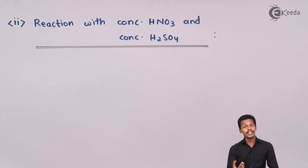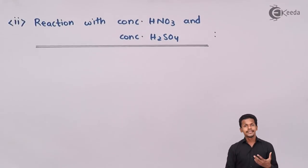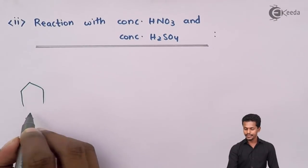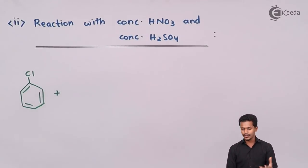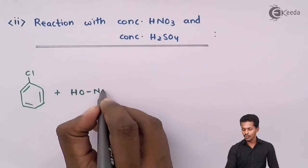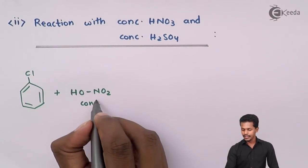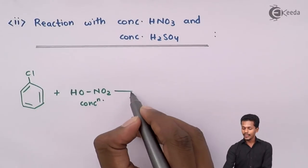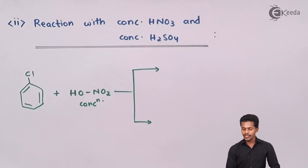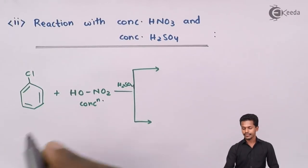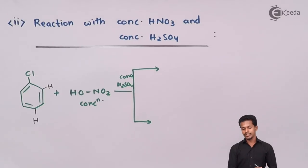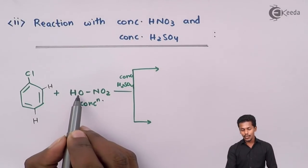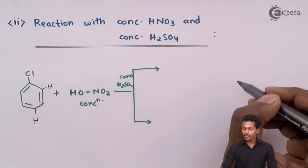The reaction of chlorobenzene with concentrated HNO3 as well as concentrated H2SO4 — basically known as the nitrating mixture — results in product formation. Suppose we use chlorobenzene along with concentrated HNO3 and H2SO4. The molecular formula of HNO3 can be written as HONO2. Since ortho and para products are what we would get, one of the OH groups removes a hydrogen atom to form the byproduct H2O.